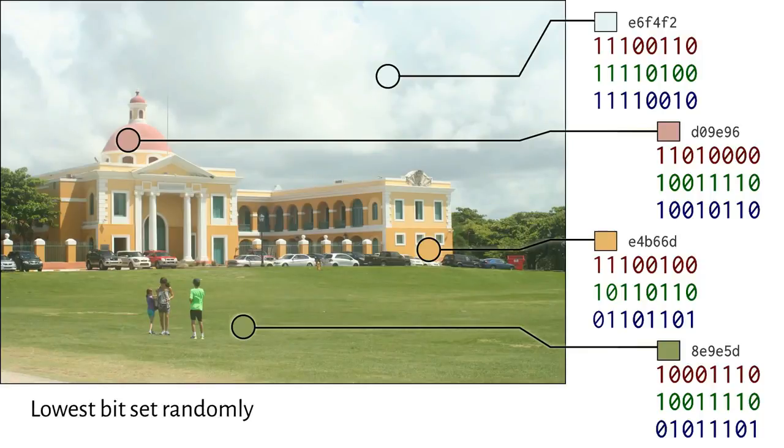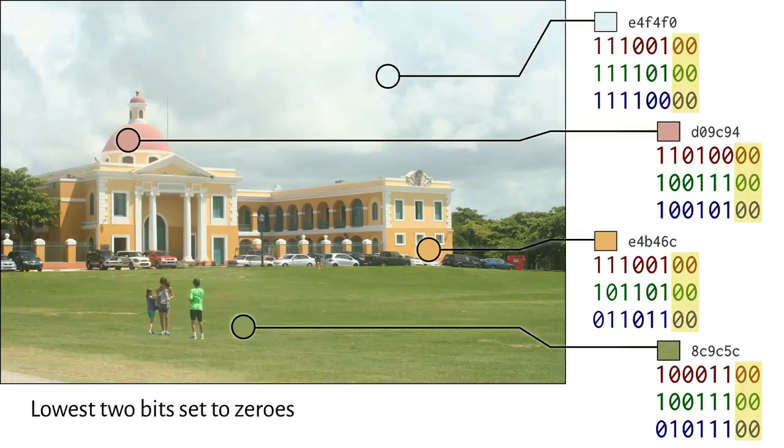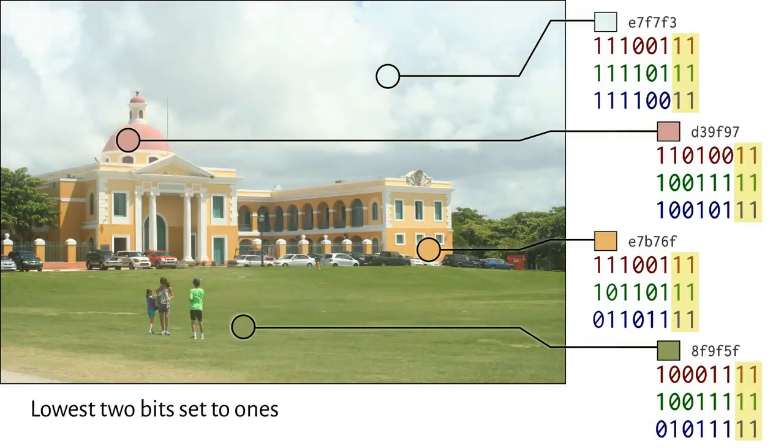Let's go further. What if I tweak the two lowest order bits in each channel? I could set them all to zero, zero, or to one, one, or any random combination. You still can't really perceive the differences.